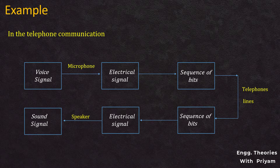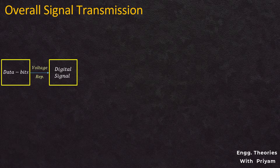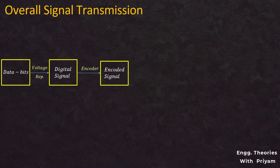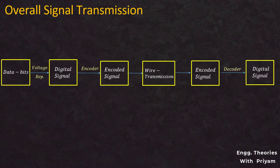The receiver receives the sequence of bits and converts them into an electrical signal, which is then converted to a sound signal with the help of a speaker. Since there is no modulation involved, this is an example of baseband transmission. Another example is computer data transmission over coaxial cables. The baseband transmission block diagram shows: input bits encoded via line encoding, transmitted over a wire, decoded at the receiver to regenerate the digital signal and recover the data bits.